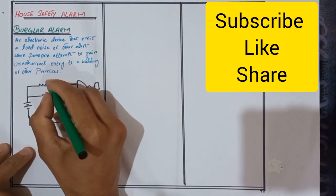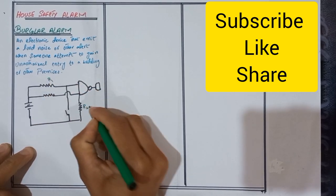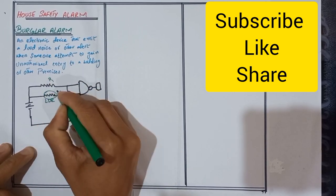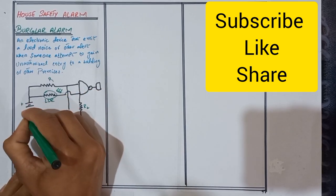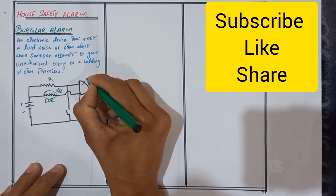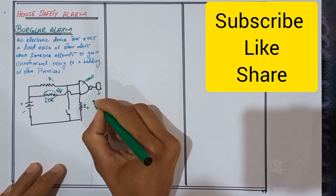In Burglar Alarm we use two resistances R1 and R2 and here we use the light dependent resistance where light falls on it. Here we use the battery and this is the NAND gate and this is the alarm.